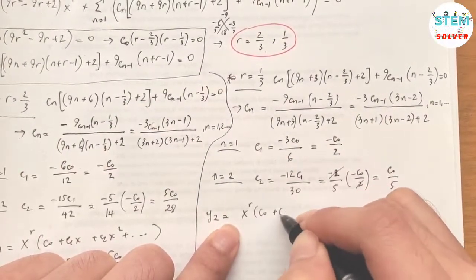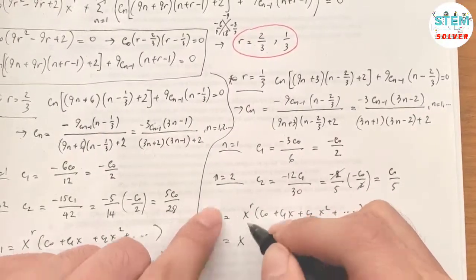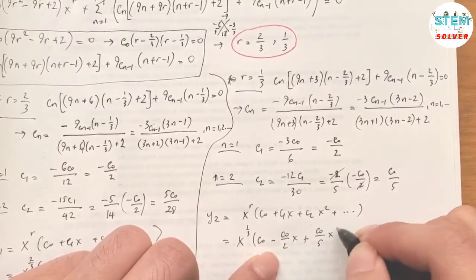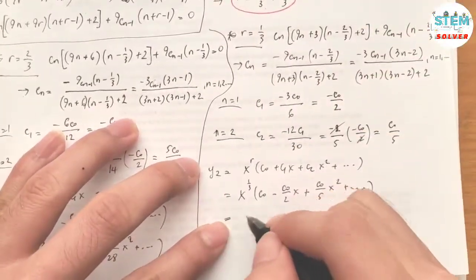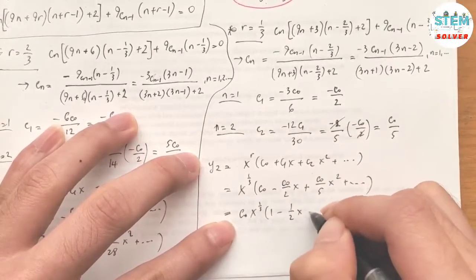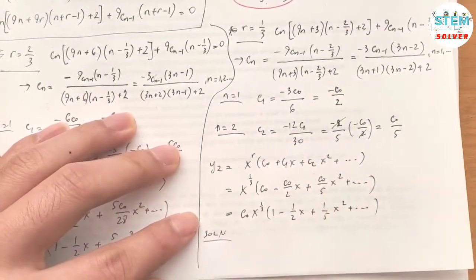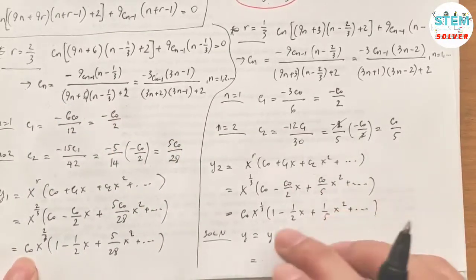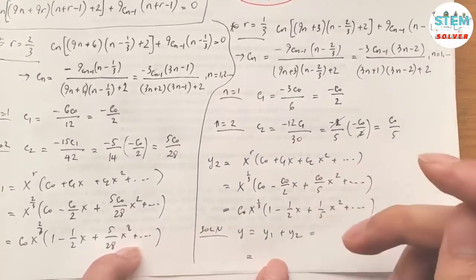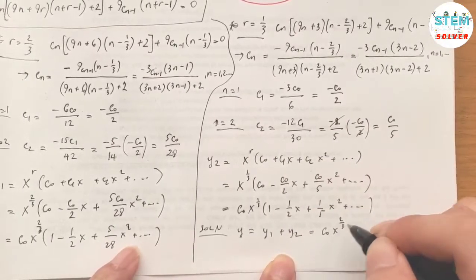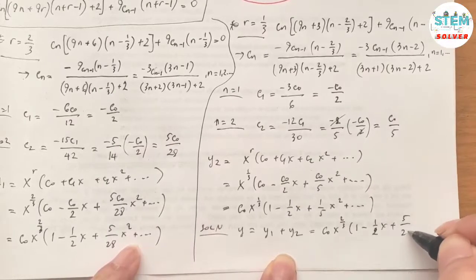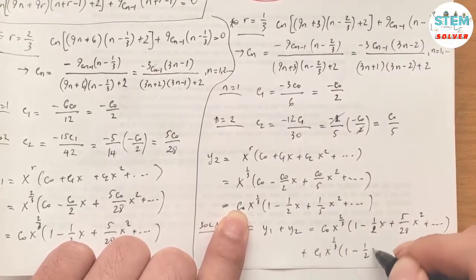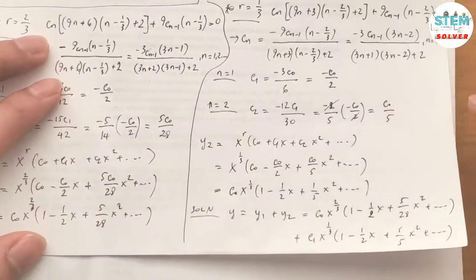So y₂ = x^(1/3) · (c₀ + c₁x + c₂x² + …) = c₀ · x^(1/3) · (1 − (1/2)x + (1/5)x² + …). The final solution is y = y₁ + y₂. Renaming the arbitrary constants, we have y = c₁ · x^(2/3) · (1 − (1/2)x + (5/28)x² + …) + c₂ · x^(1/3) · (1 − (1/2)x + (1/5)x² + …).